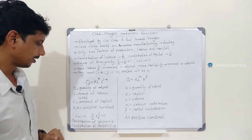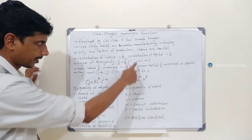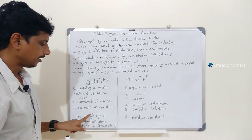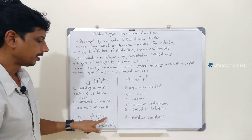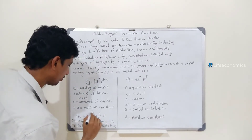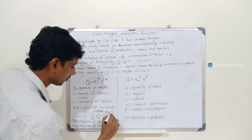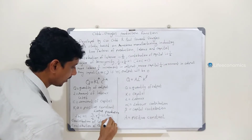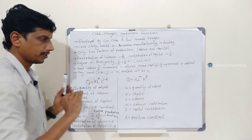The function shows that L plus C equals 1, meaning labor contribution plus capital contribution equals 1. For example, 3/4 labor plus 1/4 capital equals 1. This gives us a linear production function — a straight line.